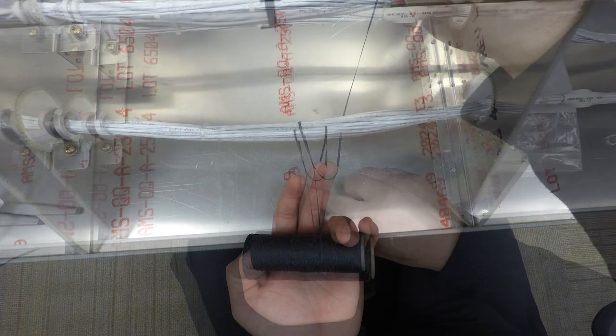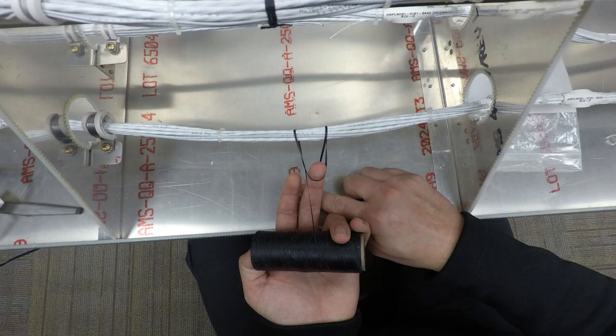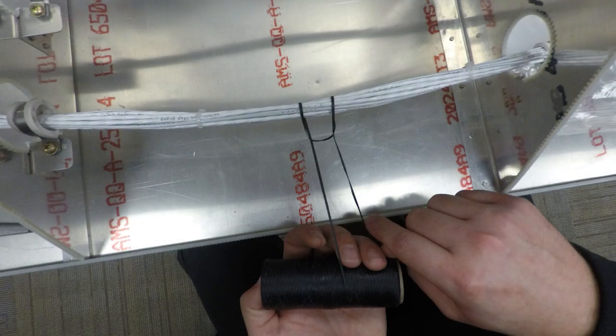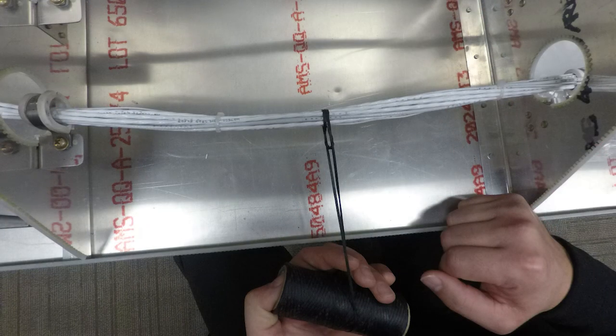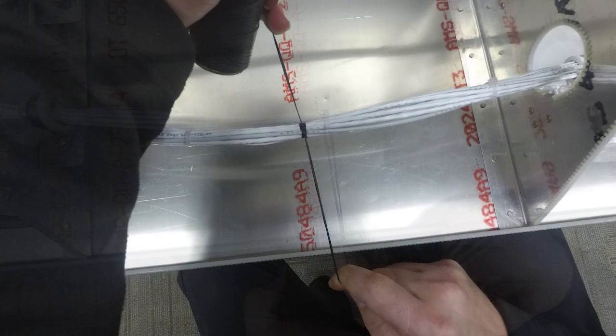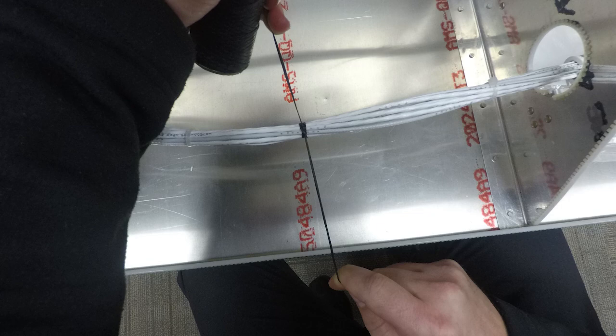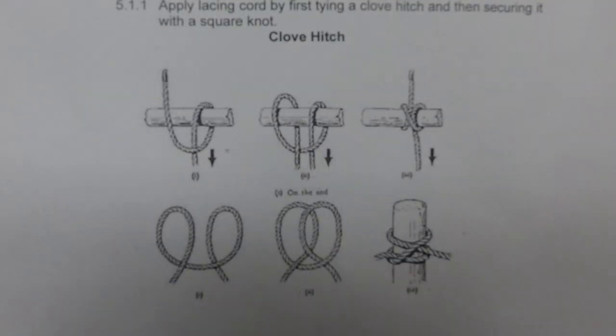Good morning. Today we're going to be doing some lace cording 101. We're going to be using the method described by the Constant Aviation Process Spec, and the number is CAPS-03 Revision D. Right there in the process spec, you'll see a diagram on how to do it. We're going to demonstrate it live.